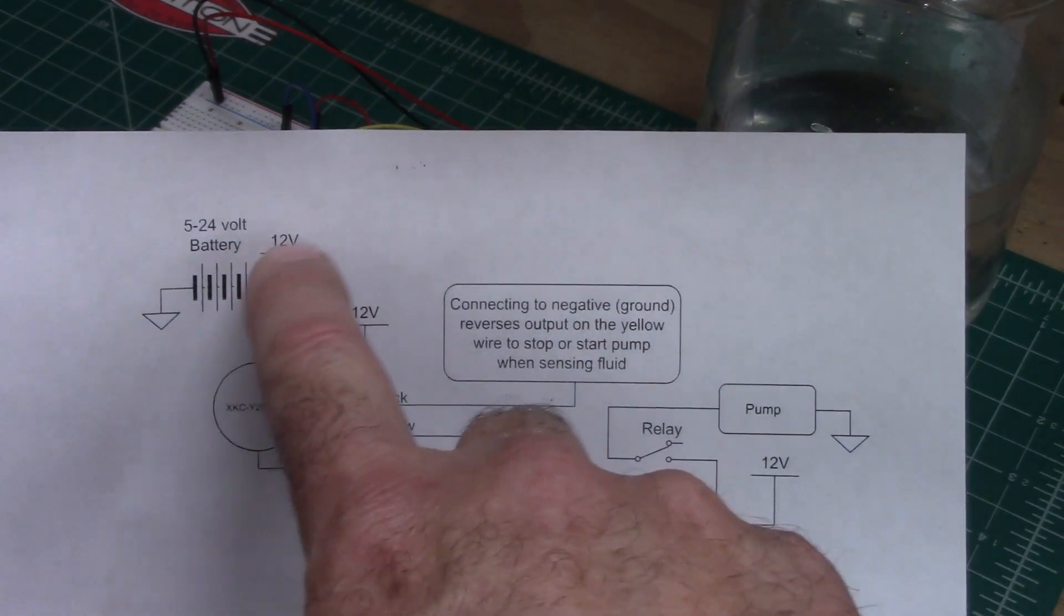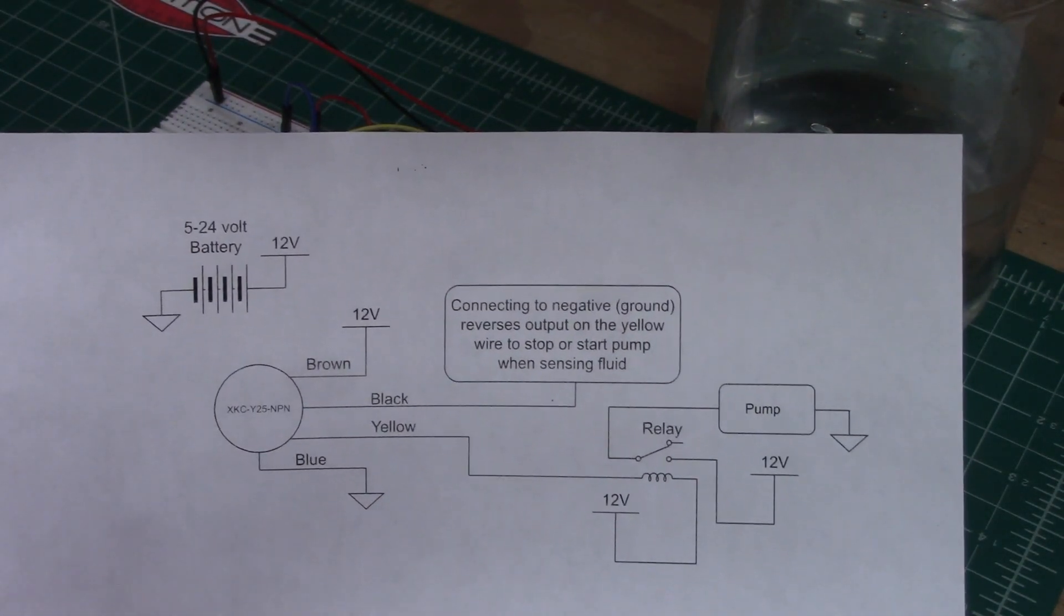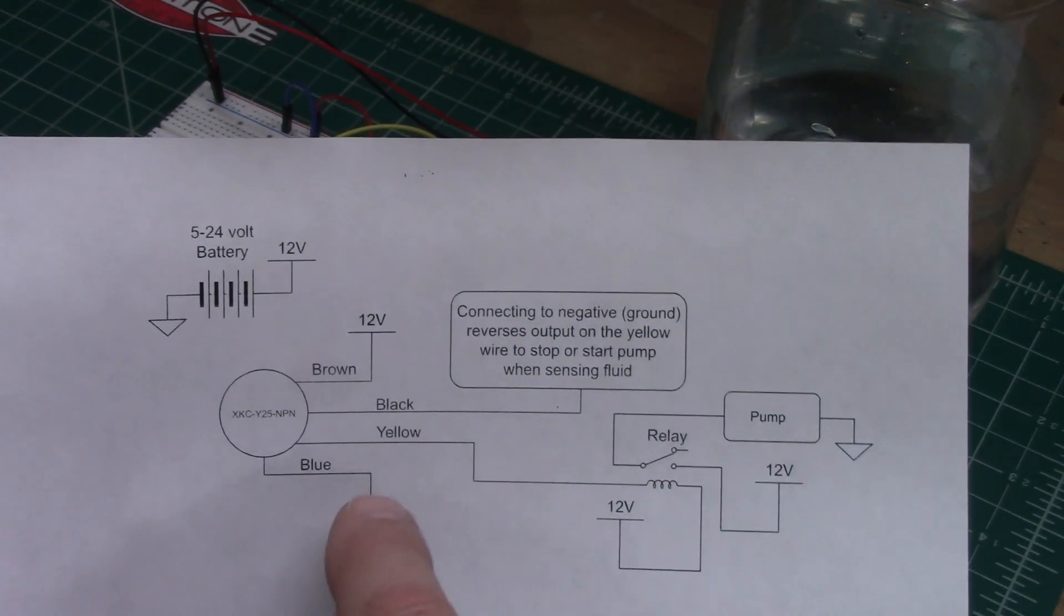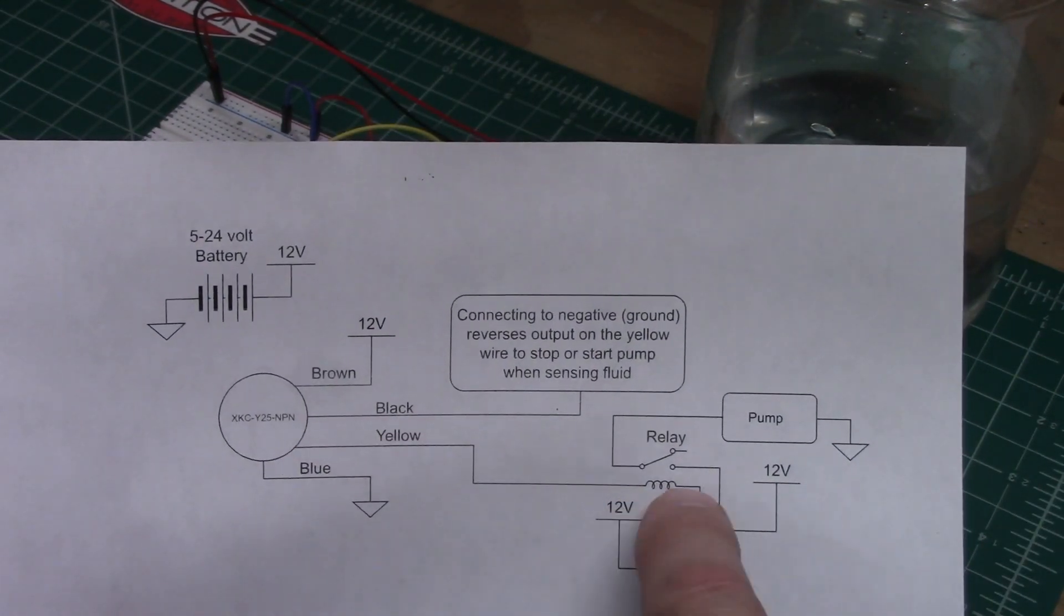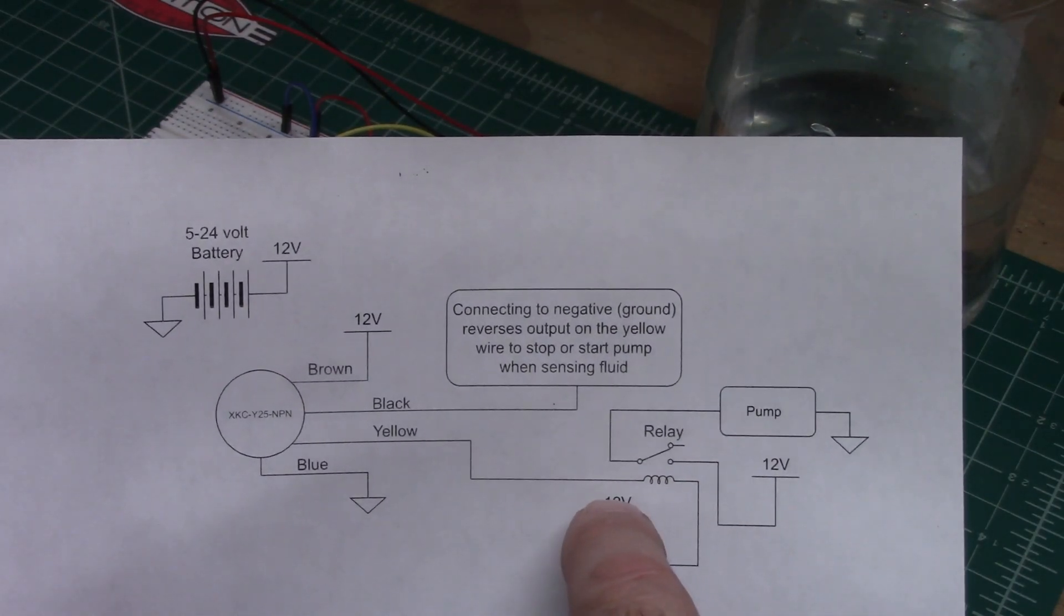And this 12 volt attaches to the 12 volt side of your battery or your transformer, whether you're using a battery or a transformer. It could be 5 to 24 volts. And then the yellow comes out and it's going to feed the coil of a relay. The other side of the coil is going to go to 12 volts.